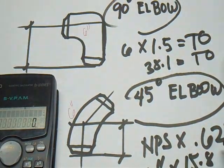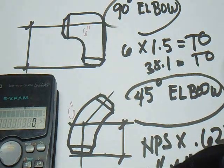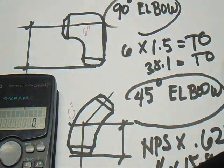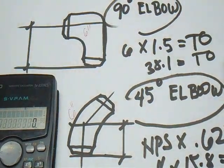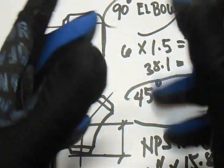15.8 equals take-off, or 6 inches multiplied by 5.8 equals take-off. That is very easy.